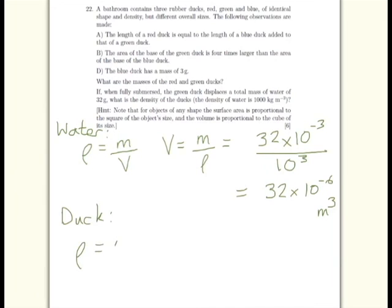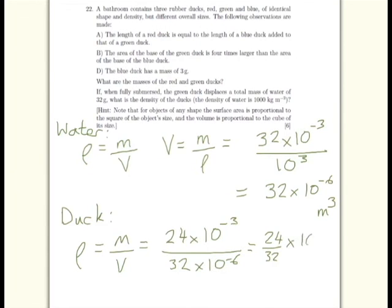Now we can do the same thing in reverse, using density equals mass divided by volume. We already know the mass of the duck, which is 24 grams, so 24 times 10 to the minus 3 kilograms. Divide that by 32 times 10 to the minus 6 cubic meters, which is our volume. So this gives us an answer of 24 over 32 times 10 to the power of positive 3, or 750 kilograms per meter cubed.